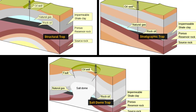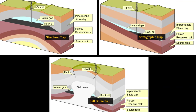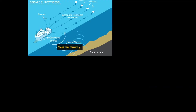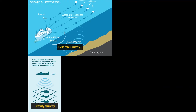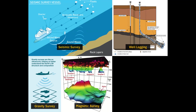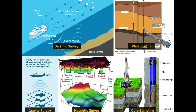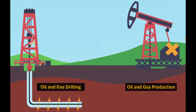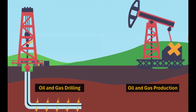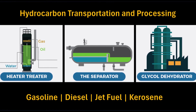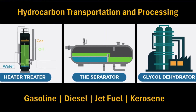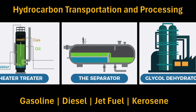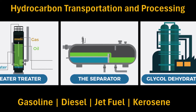There are many more variations and combinations that exist in nature. To find them, geologists use various methods such as seismic surveys, gravity surveys, magnetic surveys, well logging, and core sampling. Once a reservoir is located, engineers drill wells to access it and extract the oil and gas using pumps or pressure techniques. The extracted oil and gas are then transported to refineries where they are processed into various products such as gasoline, diesel, jet fuel, and kerosene.